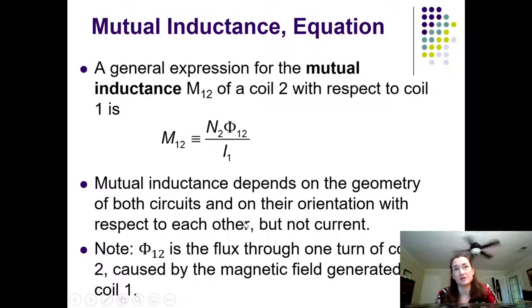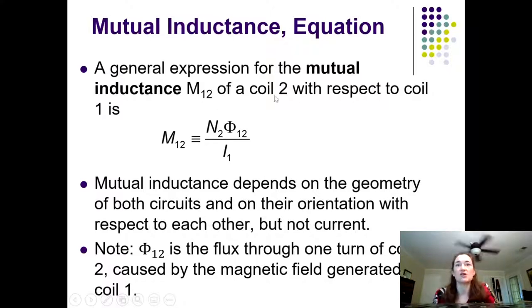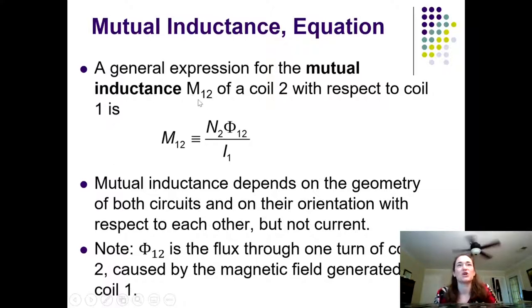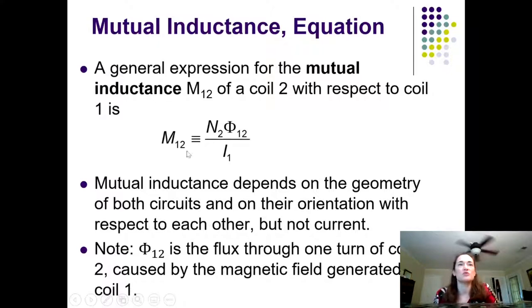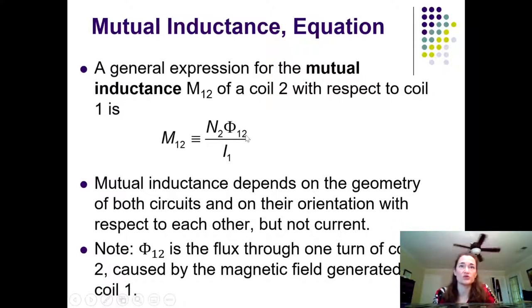We can find a general expression for the mutual inductance, which we call M. I'm calling it M1,2 — the mutual inductance of coil two with respect to coil one. Coil one is the one that has the current first, and then it creates a magnetic field which causes a changing flux in coil two. Our mutual inductance M1,2 is defined as the number of turns in coil two, N2, times the flux phi-1,2 — the flux through coil two caused by coil one — divided by I1. It's divided by I1 because I1 is the cause of the magnetic flux.